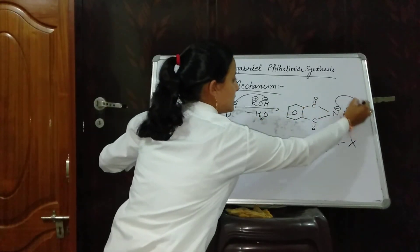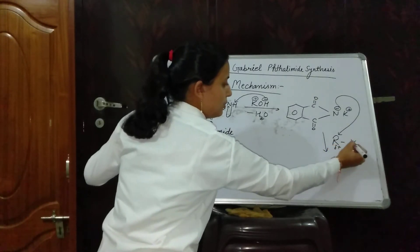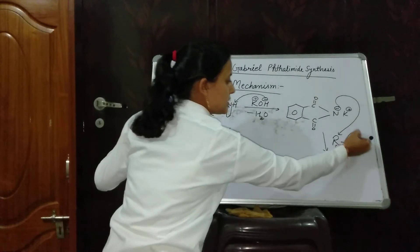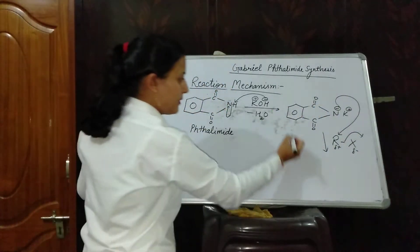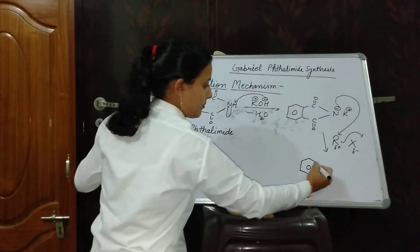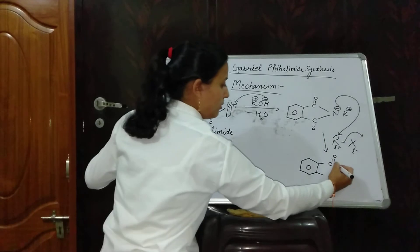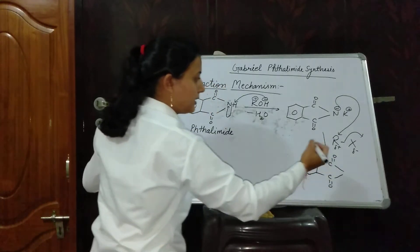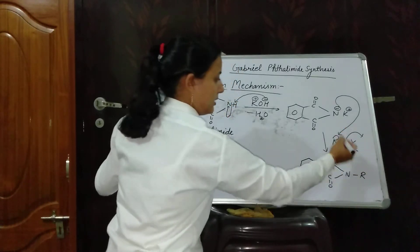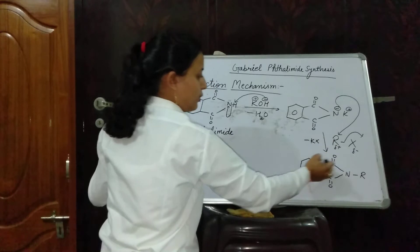The negative charge density shifts to R, as R is delta positive and X (halogen) is electronegative in nature. The negative charge attacks R and X is easily removed, giving formation of the N-alkyl phthalimide type intermediate — with C=O, C=O, N, and R — along with removal of KX from the reaction mixture.